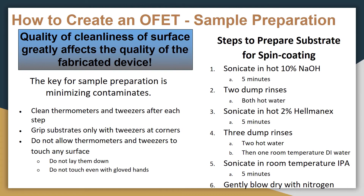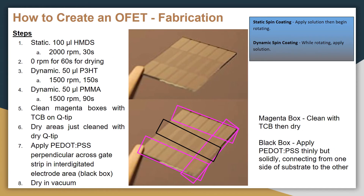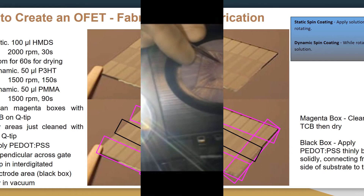The quality of cleanliness of the surface greatly affects the quality of the fabricated device. For the fabrication of an OFET, two spin coating methods need to be known. Static spin coating is when you apply the solution while the sample is stationary. Dynamic spin coating is when you rotate the sample and then apply the solution.